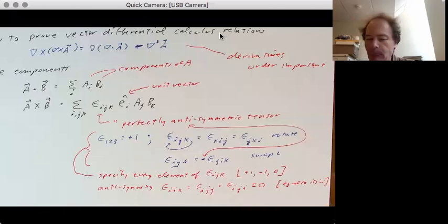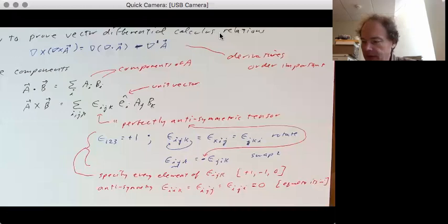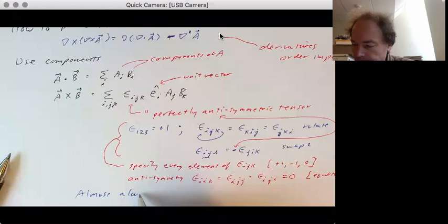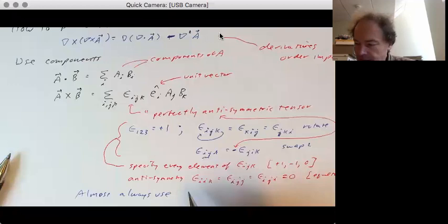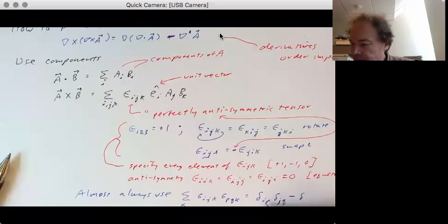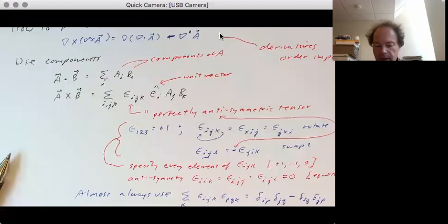Okay, now, a rule we almost always used is the fact that if we sum over k, epsilon i, j, k, epsilon p, q, k, that's going to be equal to delta i, p, delta j, q, minus, because of the anti-symmetry, delta where we swap here, it's i, q, delta j, p.